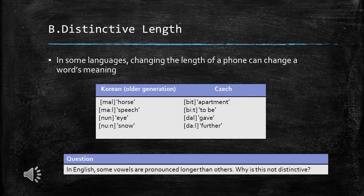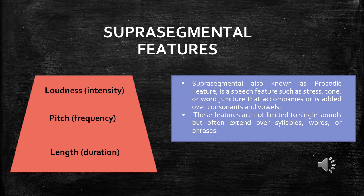Pitch, tone, and intonation: Pitch refers to the perception of relative frequency — for example, perceptually high pitch or low pitch. Suprasegmental features, also known as prosodic features, are speech features such as stress, tone, or word juncture that accompany consonants and vowels. These features are not limited to single sounds but often extend over syllables, words, or phrases.